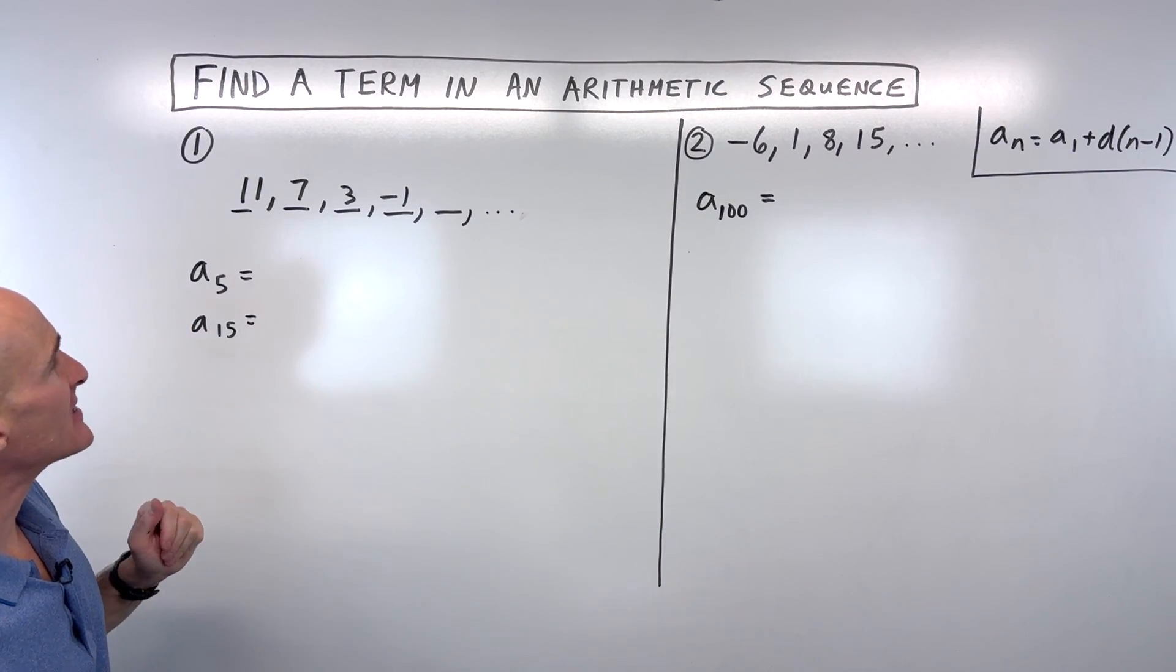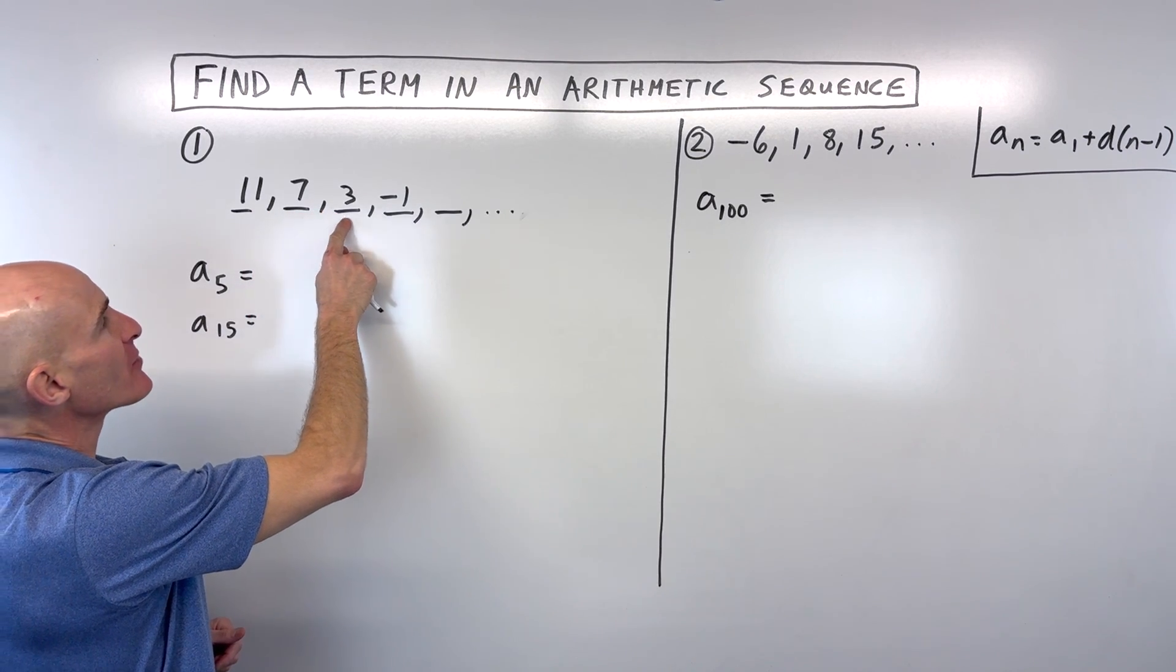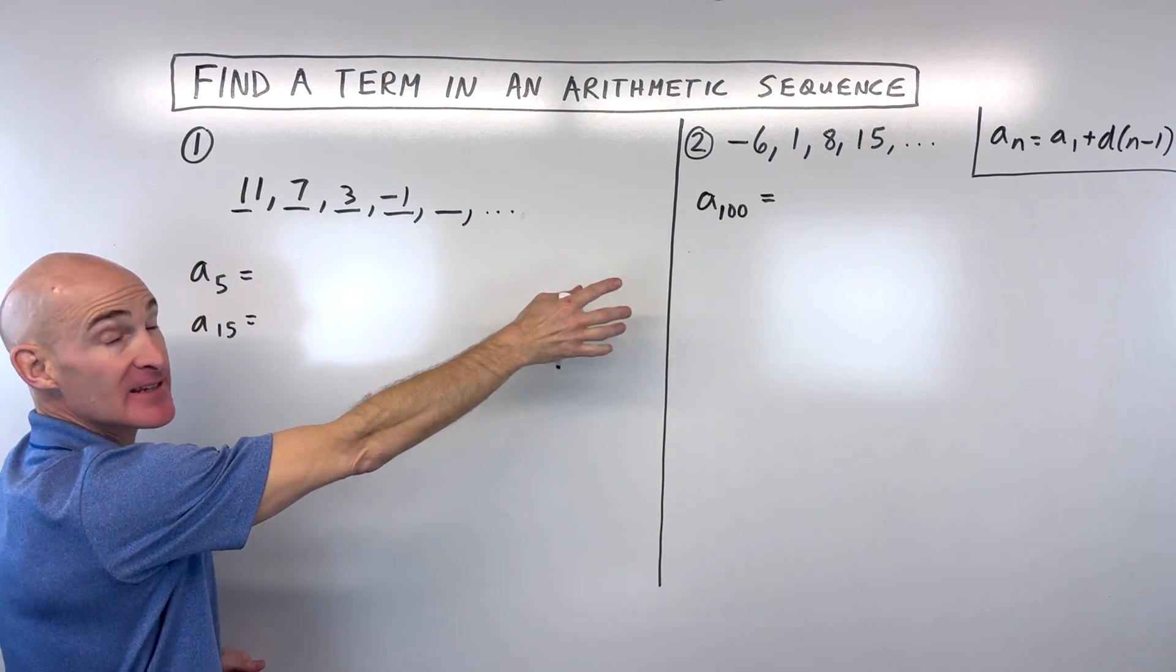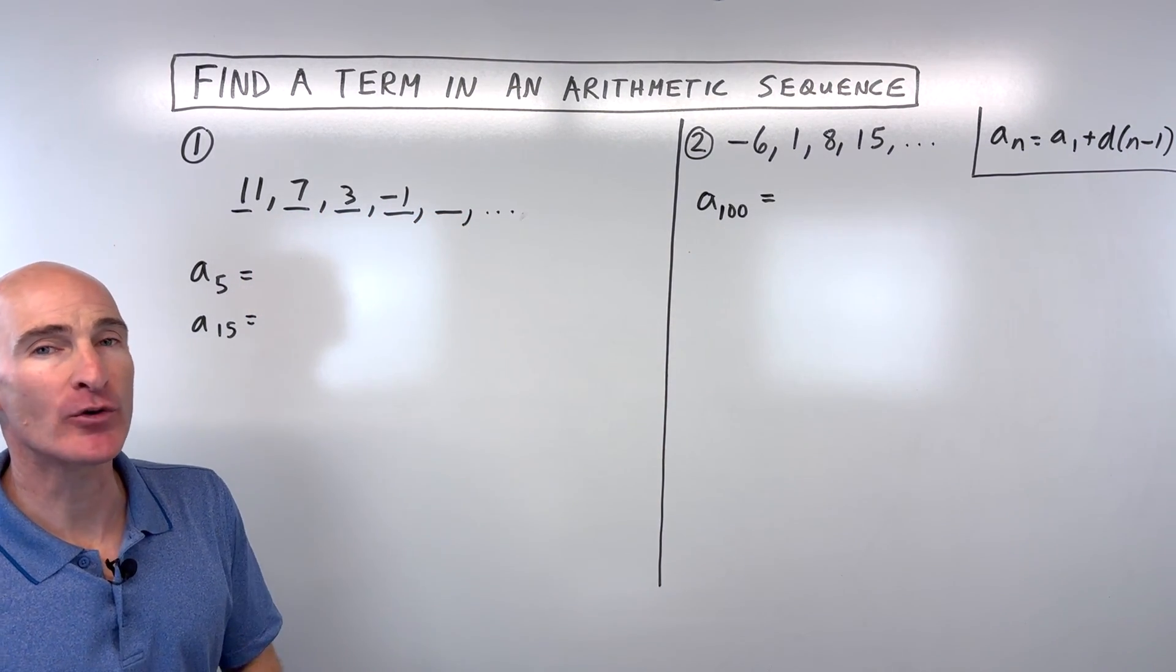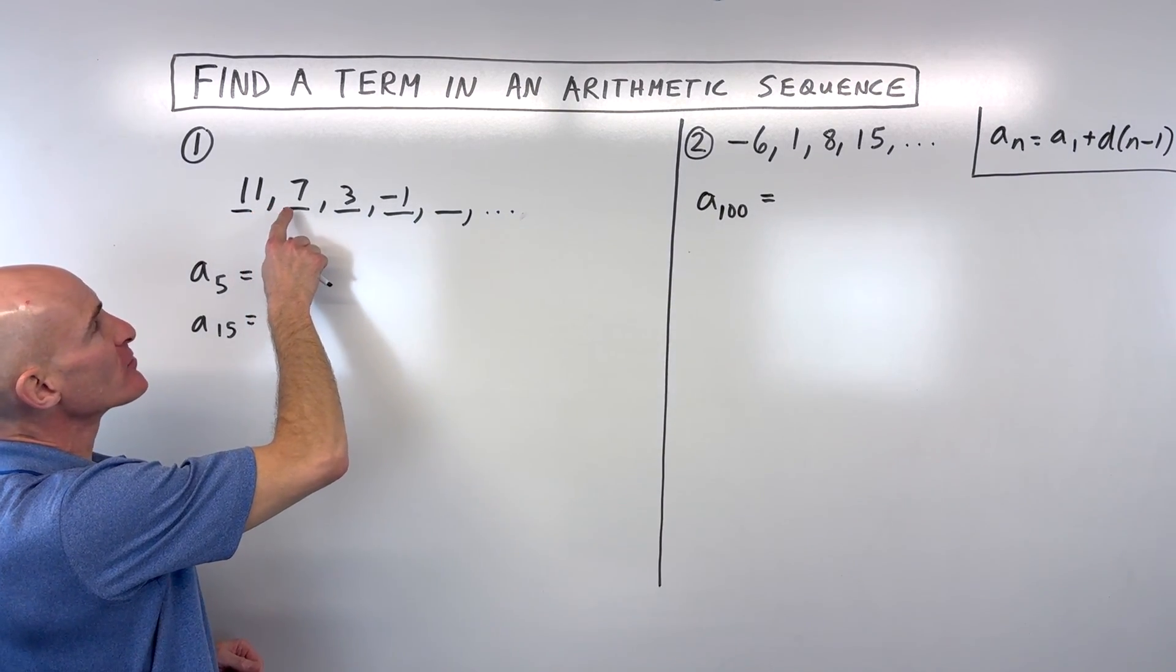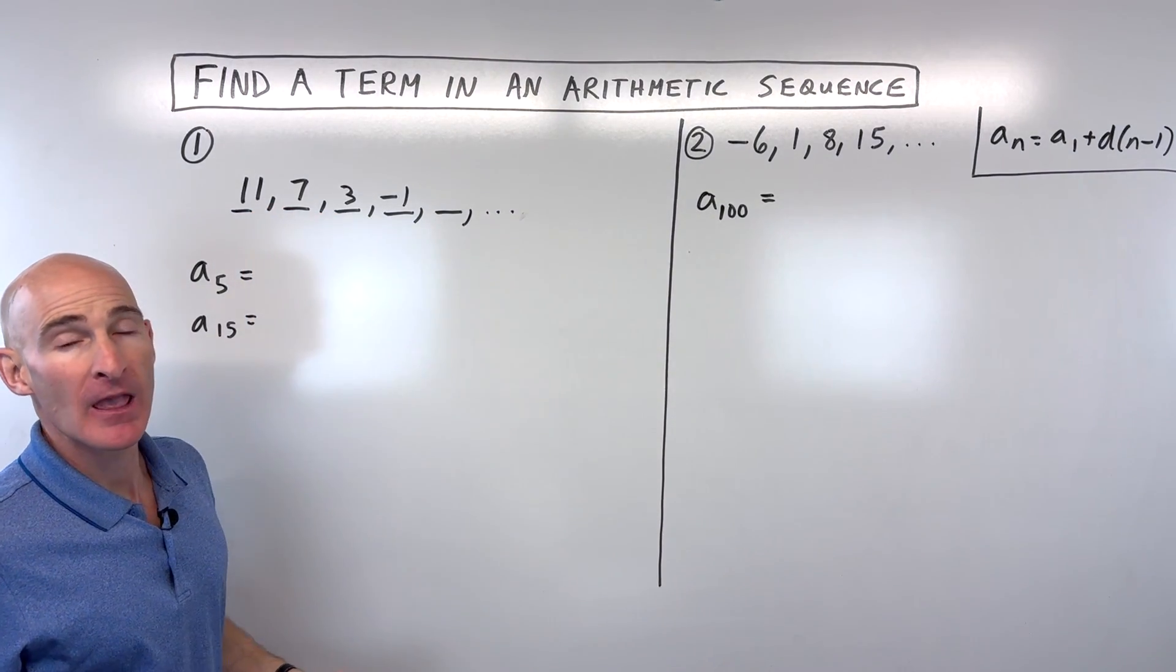So the first example here, we've got 11, 7, 3, negative 1, dot dot dot. So what's the pattern here? What are you noticing? How are we getting from this first term to this next term?